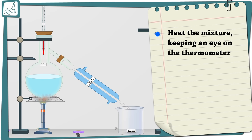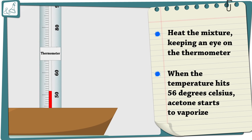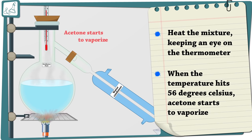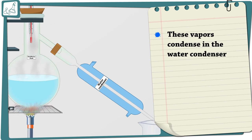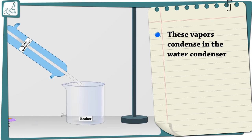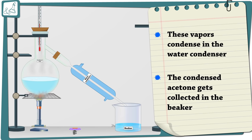Heat the mixture, keeping an eye on the thermometer. When the temperature hits 56 degrees Celsius, acetone starts to vaporize. These vapors condense in the water condenser.